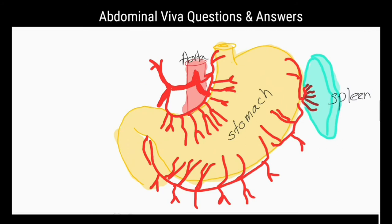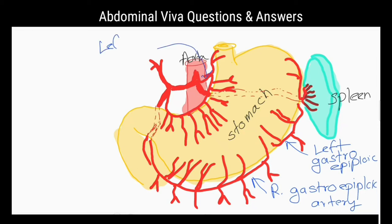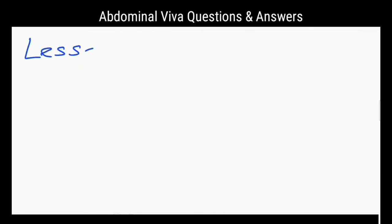The right crus of the diaphragm acts as a pincock to the lower esophagus. What are the arteries that supply the stomach? Left gastric artery, right gastric artery, short gastric arteries, left gastroepiploic artery, and right gastroepiploic artery.